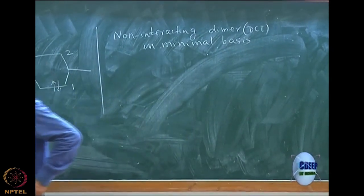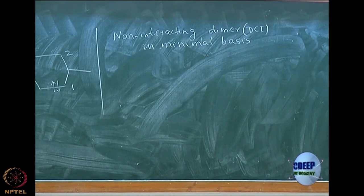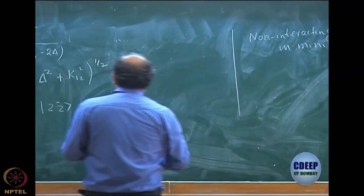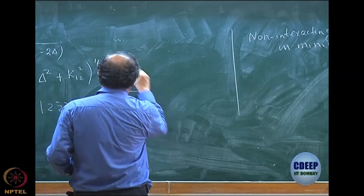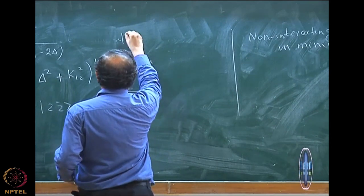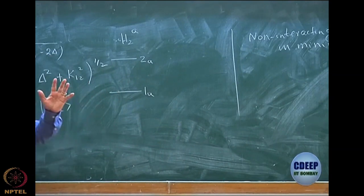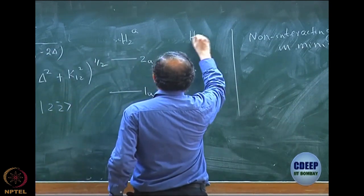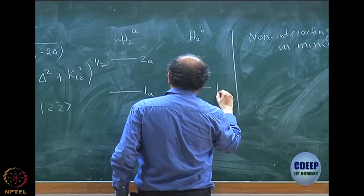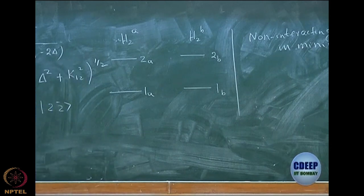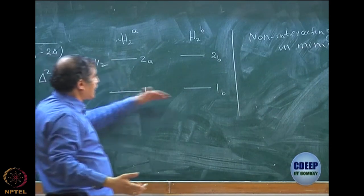For each hydrogen molecule, I have two molecular orbitals, 1 and 2 which I am calling sigma g. I will rewrite this diagram: 1A and 2A for molecule A, and for H2B I will have 1B and 2B. At a non-interacting regime, their energies will be exactly identical — they are degenerate.